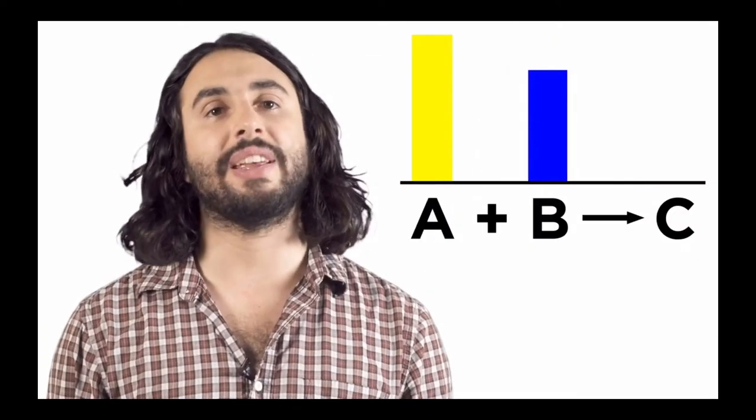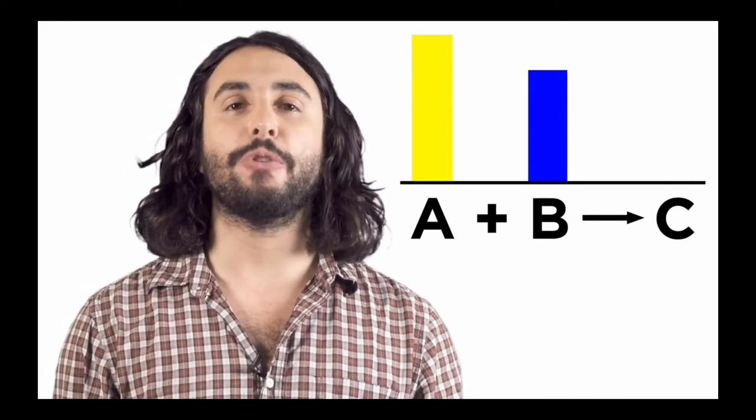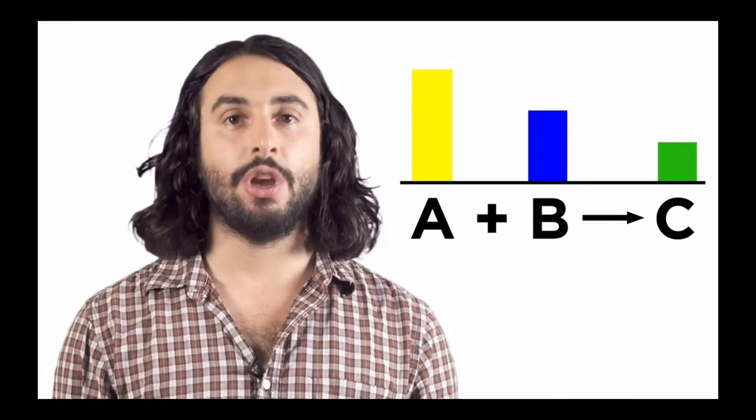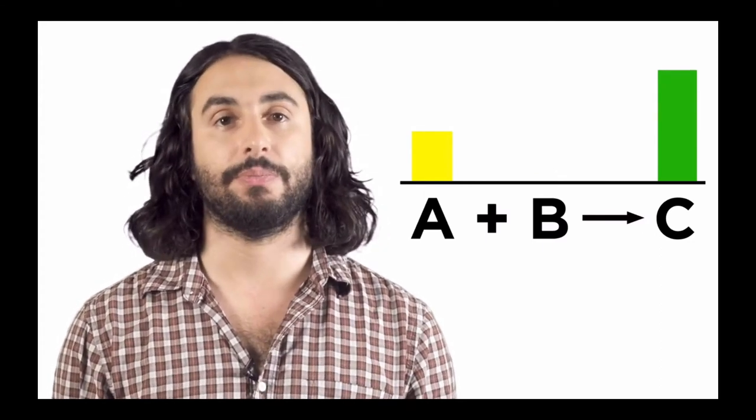We learned how to use stoichiometry to discuss limiting reagents and how much of the products to expect, but these were for unidirectional reactions where we assume that all the reactants make products and then the reaction is over. With equilibria, it's a little more complicated to calculate what the concentrations of each substance will be at equilibrium. So we're going to have to do a little bit of math to be able to describe the system.